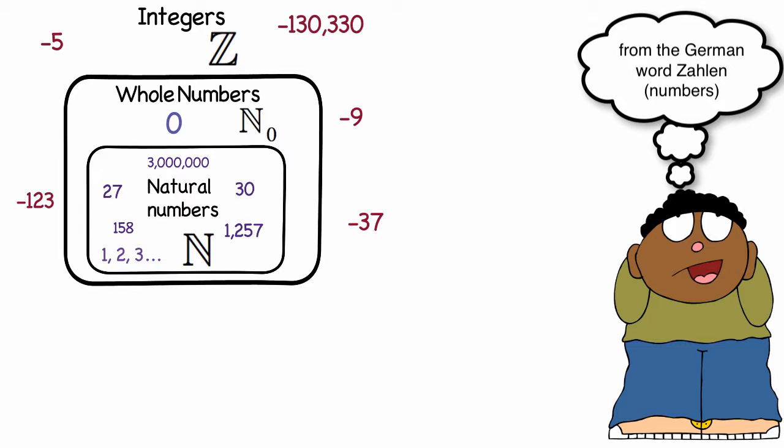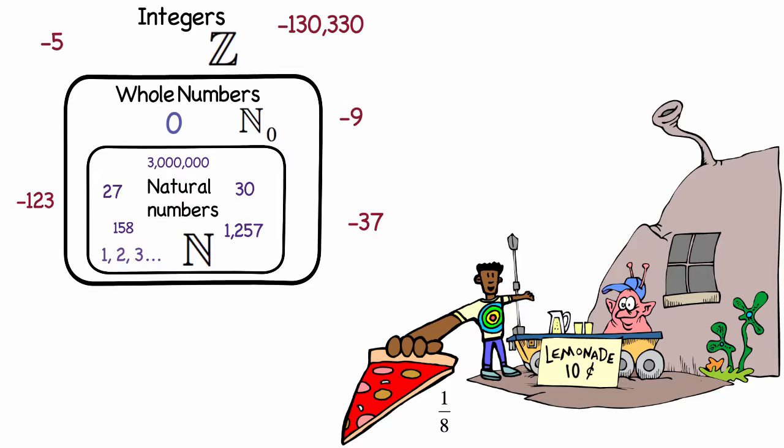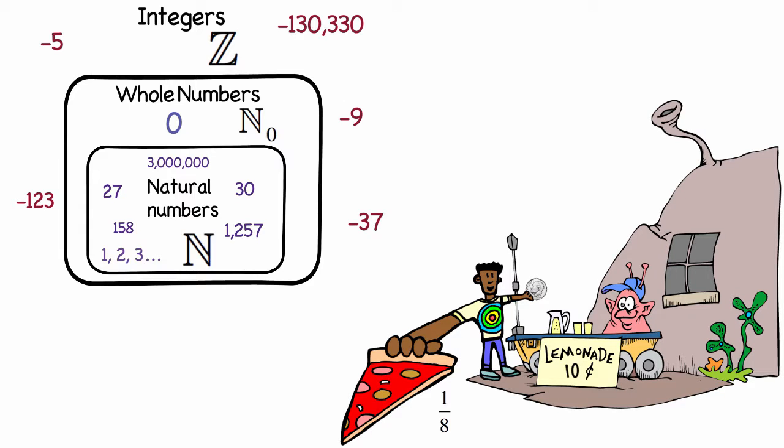But you might have noticed real life does not come in whole pieces. For example, we can eat an eighth of a pizza. And if I have a dime, that represents one-tenth of a dollar. And we usually represent that using the decimal .10.